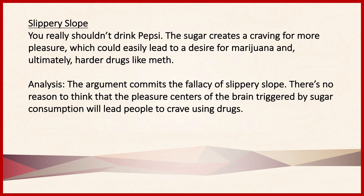The next fallacy, slippery slope, also involves a causal claim. However, where false cause makes a claim about some causal event that has occurred or is occurring, slippery slope fallacies occur when you make a claim about the future. The presumption is that if one event occurs, then some other event will occur, and then another, and we'll end up with some sort of disaster — but there isn't sufficient support given for that kind of hypothetical causal reasoning. For example: you really shouldn't drink Pepsi. The sugar creates a craving for more pleasure, which could easily lead to a desire for marijuana and ultimately harder drugs like meth. Obviously this is a slippery slope — there's no reason to think the pleasure centers triggered by a sugar high will lead people to crave marijuana or meth.